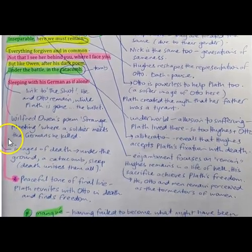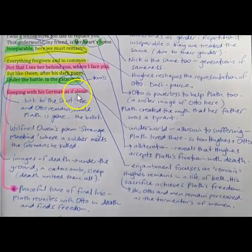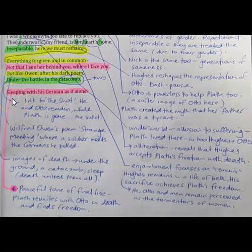Hughes is using that intertextual reference to draw that stronger statement about the freedom that Plath achieves. This last line has this really peaceful tone. There's a sense that death is the means by which Plath achieves freedom and peace. What that does is present this idea that Hughes and Otto have sacrificed themselves and by their suffering, by their continued suffering, their suffering enables Plath to become free.